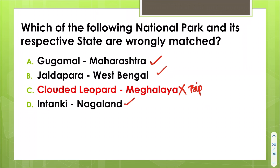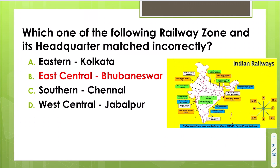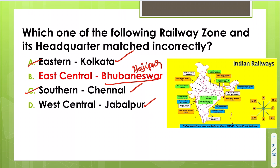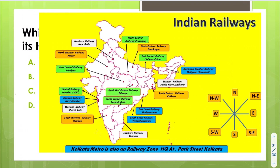Clouded Leopard National Park is in Tripura. For railway zones and headquarters matched incorrectly: Eastern Railway is in Kolkata — correct; Southern Railway is in Chennai — correct; West Central is in Jabalpur — correct. The wrong one is East Central Railway, which should be in Hajipur, not as given. East Central Railway station is in Hajipur; West Central Railway station is in Jabalpur, Madhya Pradesh.